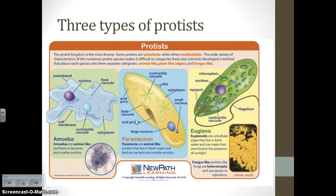We're going to begin by talking about animal-like protists. You are responsible for knowing the structures of an amoeba, the structures of a paramecium, the structures of euglena, and you need to know that slime molds are an example of a fungus-like protist.